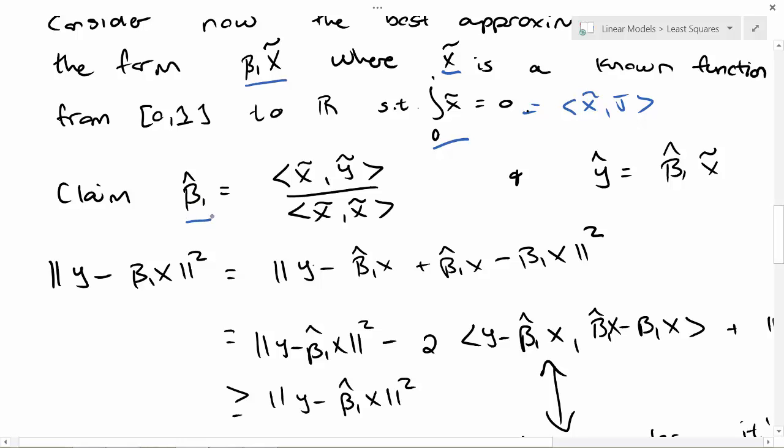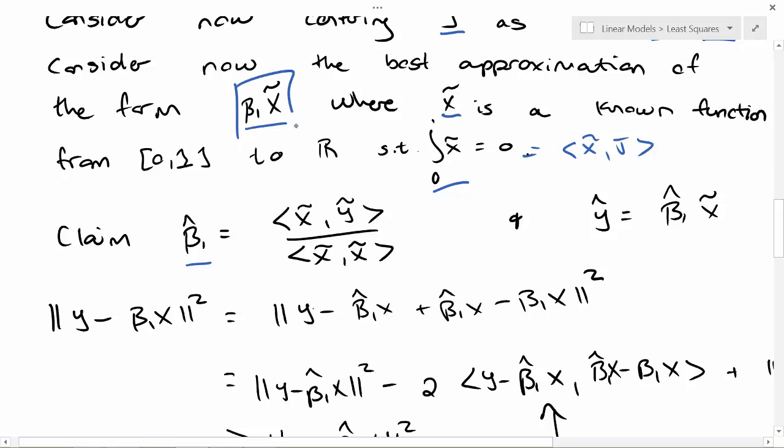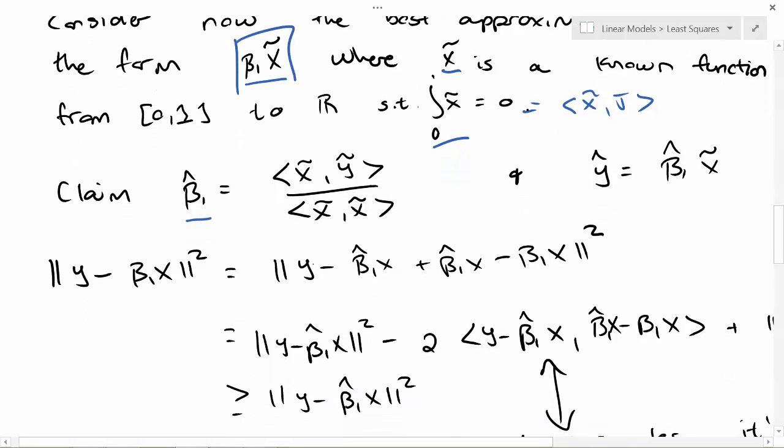So my claim is that my beta_1 hat, the best approximation to y of this form, is going to take exactly the form of our regression to the origin estimate, the inner product of x and y divided by the inner product of x with itself.